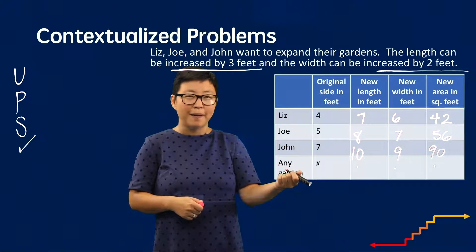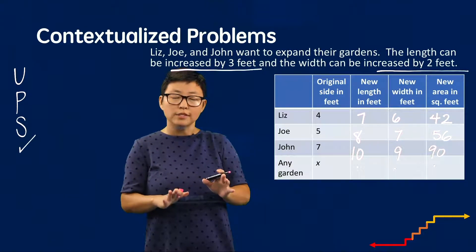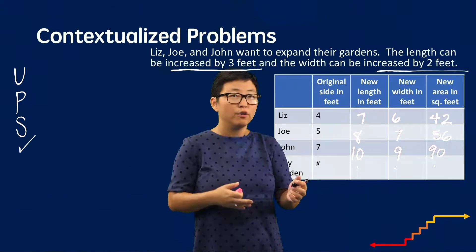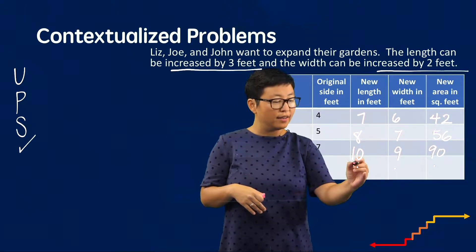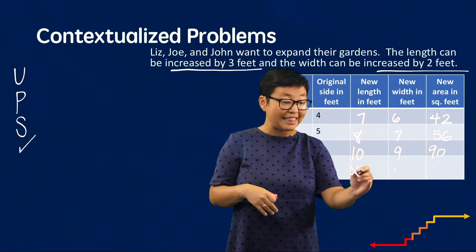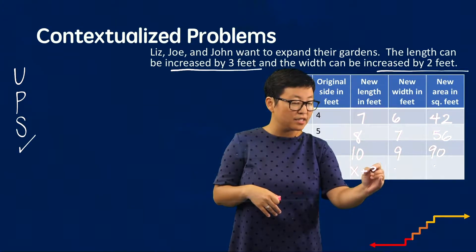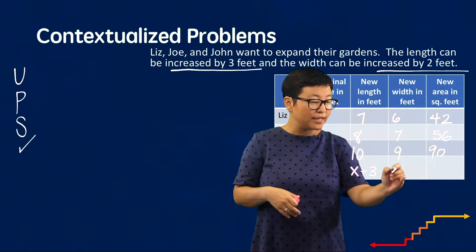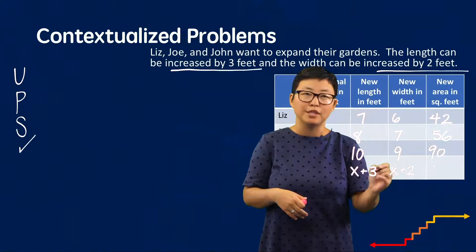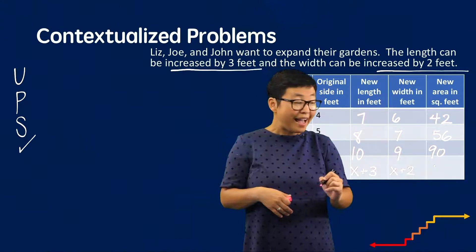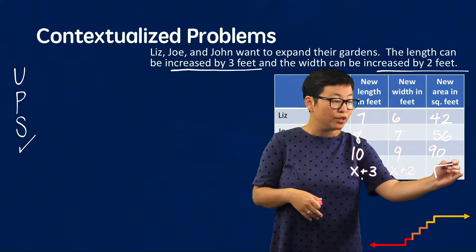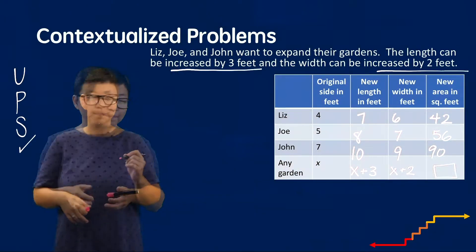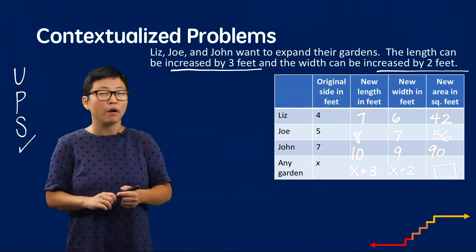Now I look at the bottom row, which says 'any garden whose original side length is x.' If the length is increased by 3 feet, the new length is x plus 3 feet. The width is increased by 2 feet, so the new width is x plus 2 feet. Now I'm ready to use the second part of my plan — the graphic organizer — to figure out what the new area in square feet is going to be. Students are going to draw their own graphic organizer, accounting for both terms so all cells can be filled.